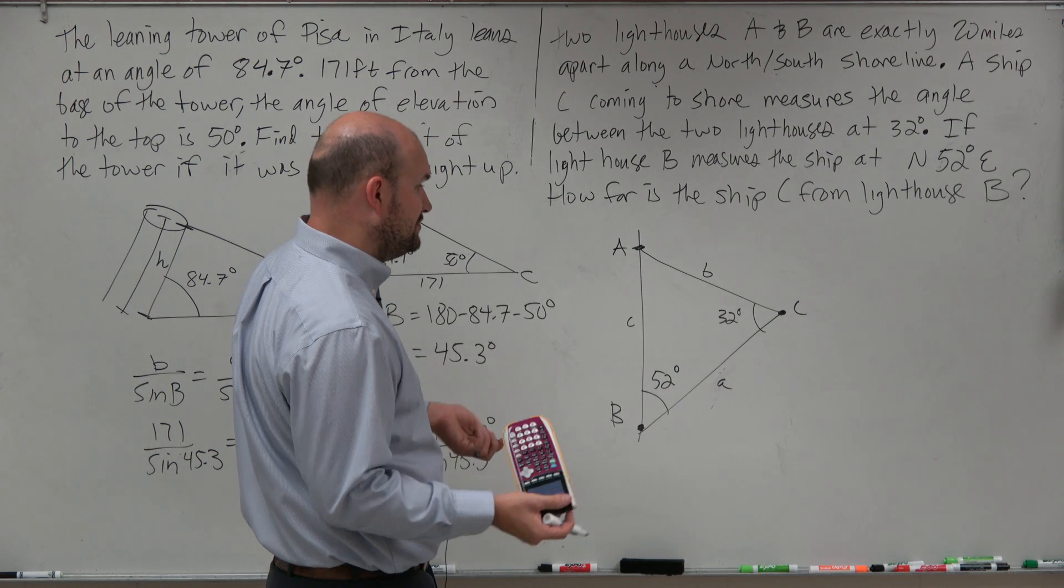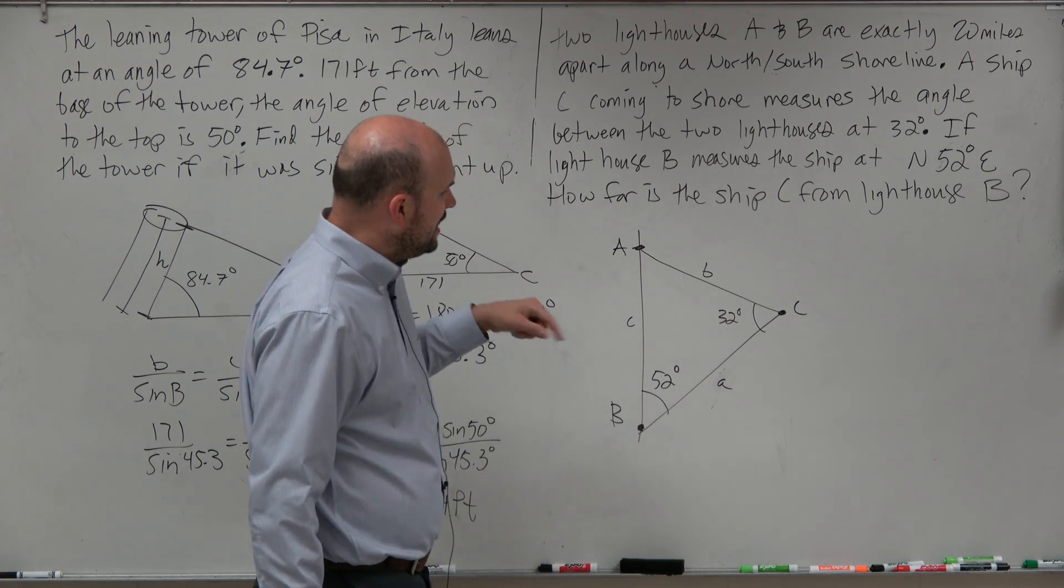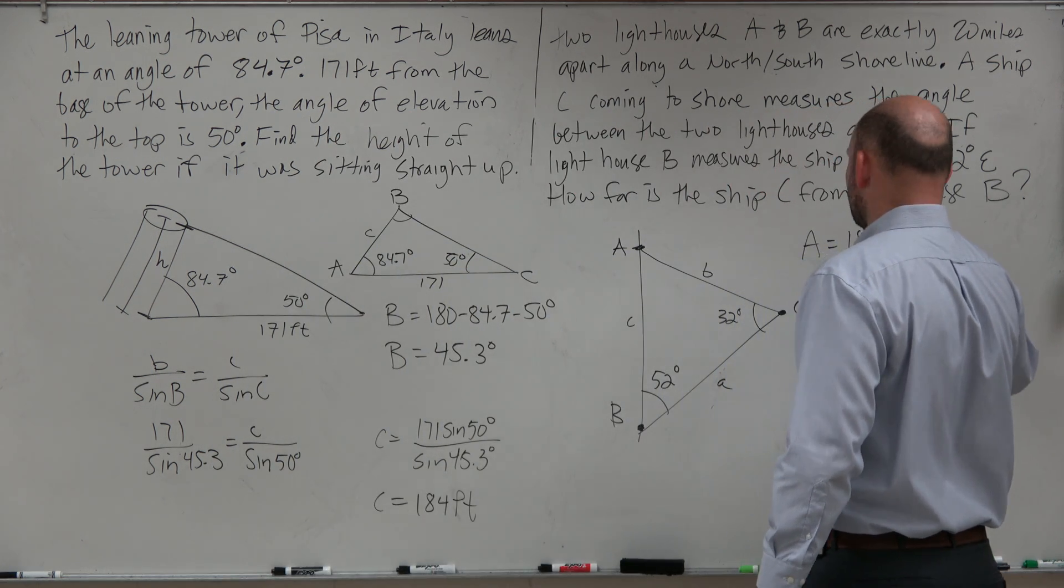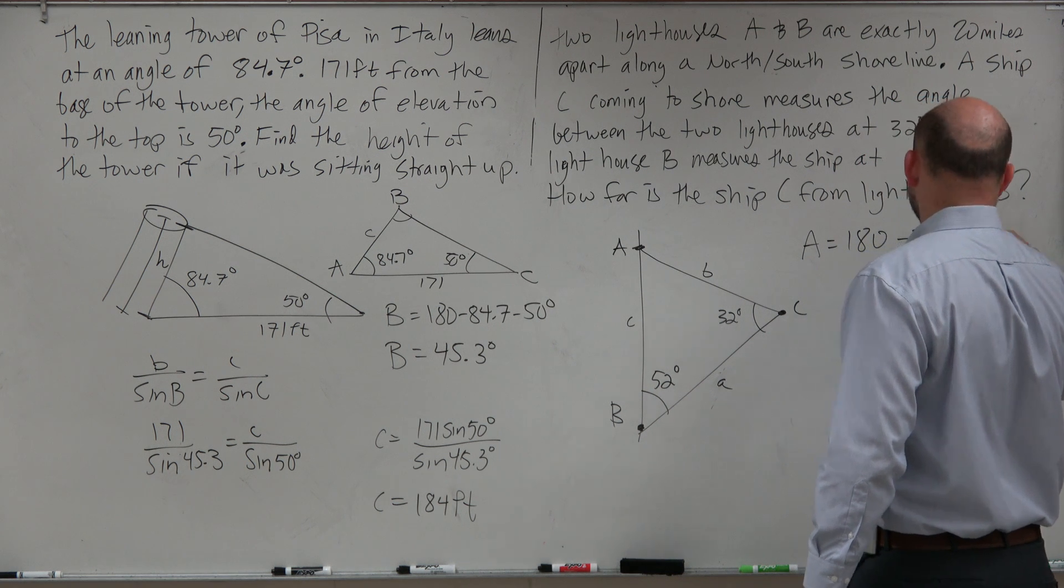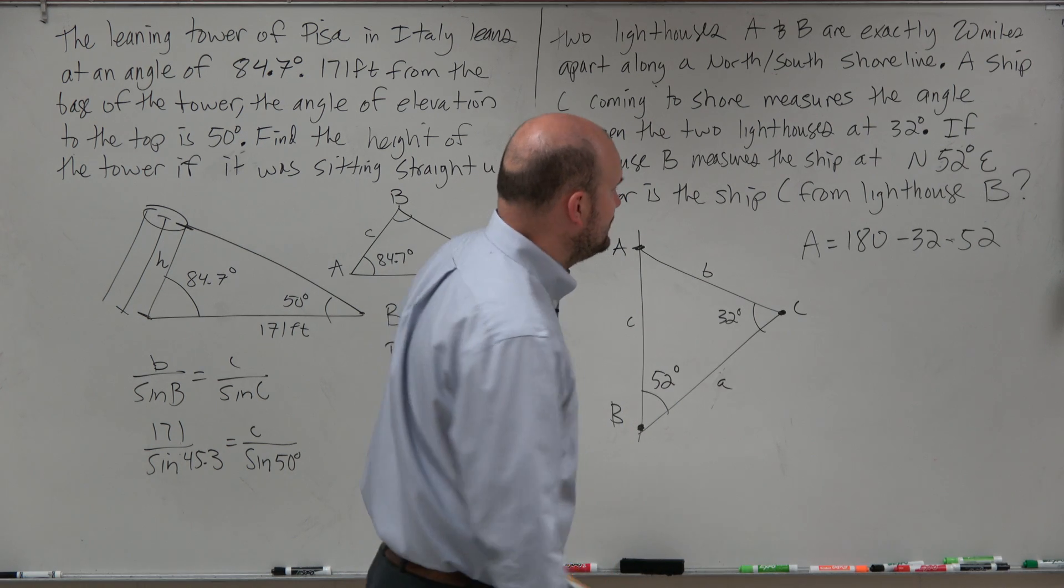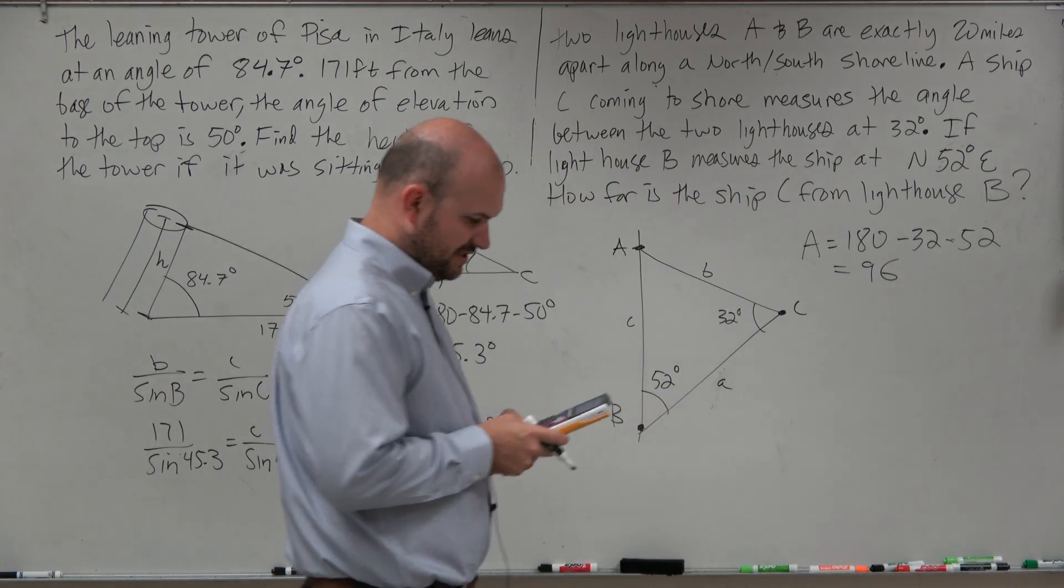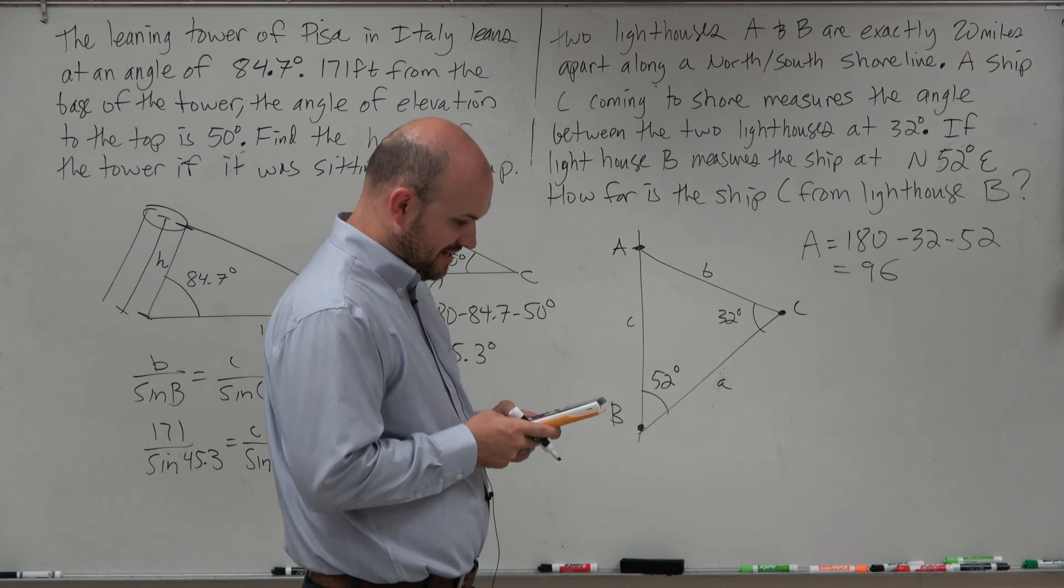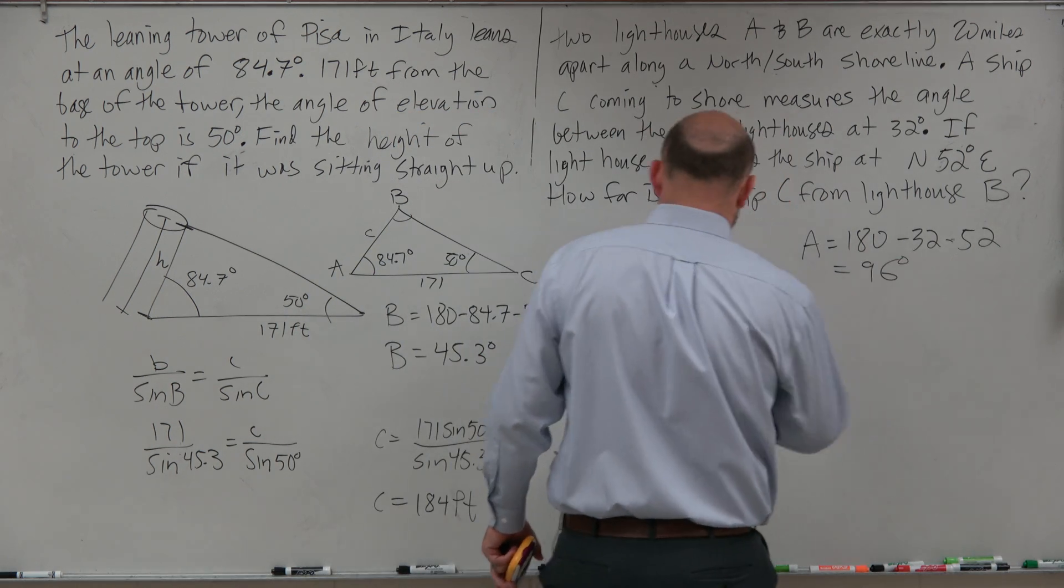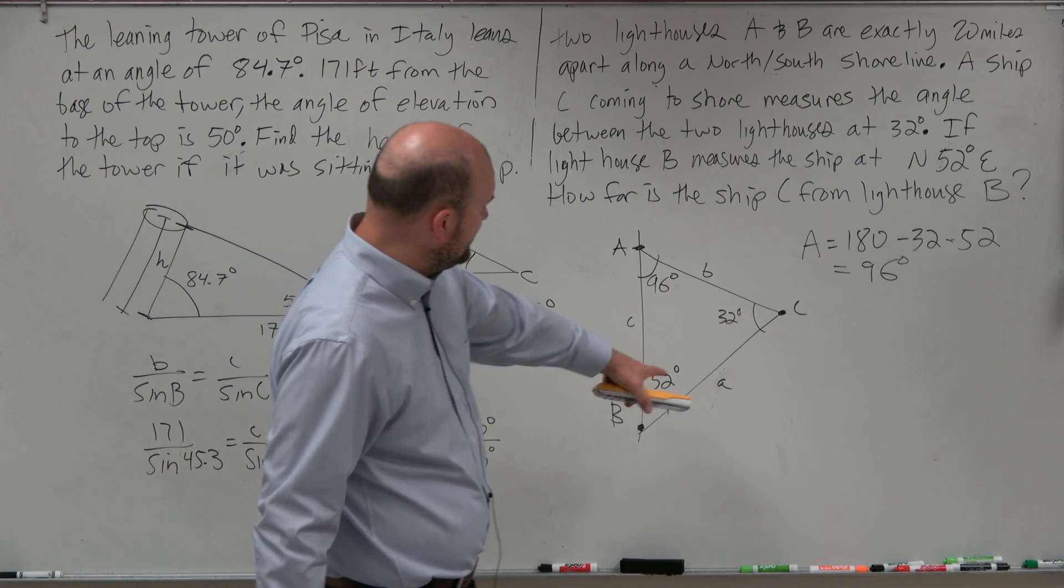Either way though, what you notice is we need to figure out what my third angle is. So I can say angle A is equal to 180 minus 32 minus 52. So that's going to be 84, so A is equal to 96. I'm just going to double check just to make sure I didn't do any stupid mental math. Perfect. So therefore, that's equal to 96 degrees.